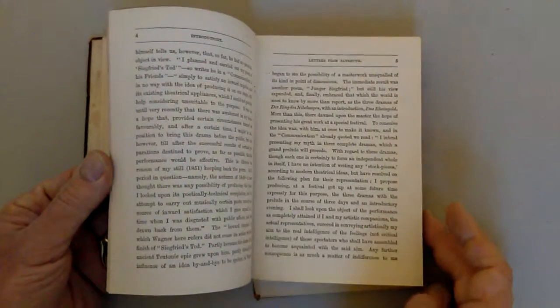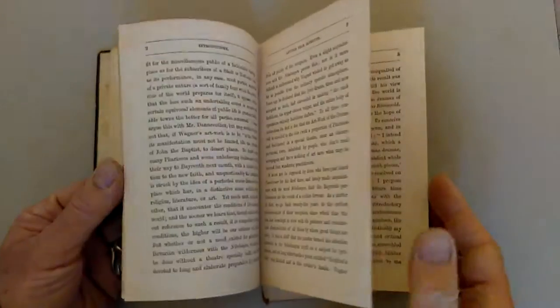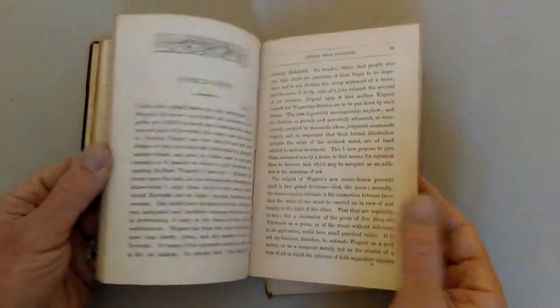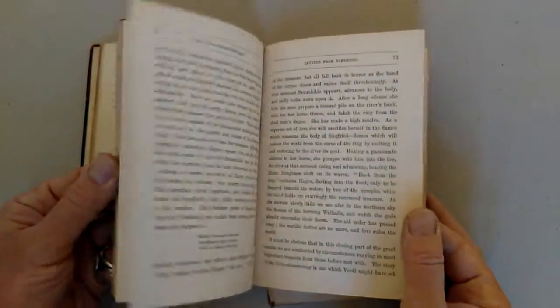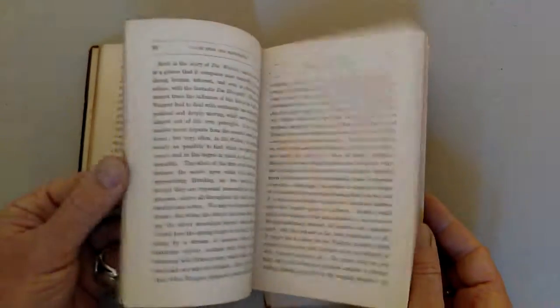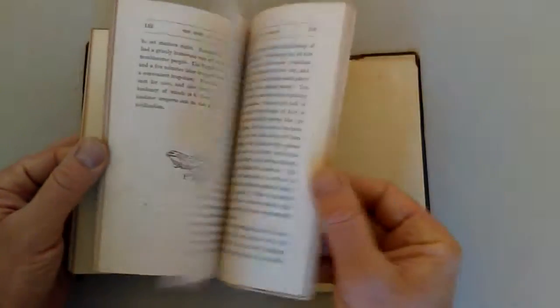Bennett visited the theatre there and writes about the life in Bayreuth, the productions, the whole atmosphere of Wagnerian productions, the music performances themselves. He writes about imperial visits. Then he goes on to the town of Hans Sachs to Nuremberg.